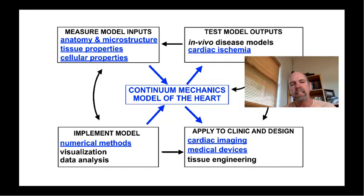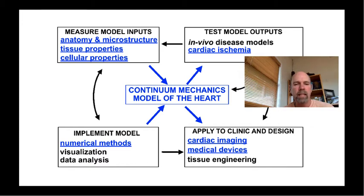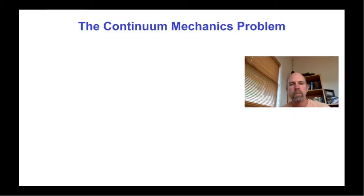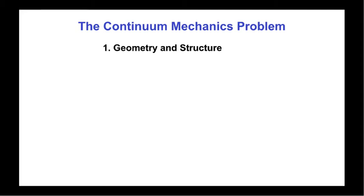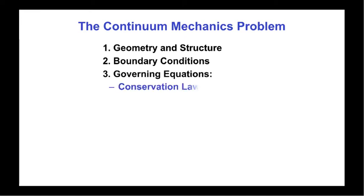Now that we've seen examples of this critical interaction between experimental and physiological measurement, theory, computation, and design in biomechanics, let's review some of the key ideas from continuum mechanics. The elements of a boundary value problem in continuum mechanics consist of the geometry and structure of the body or domain of interest, the boundary conditions, and the governing equations that include conservation laws including conservation of mass.